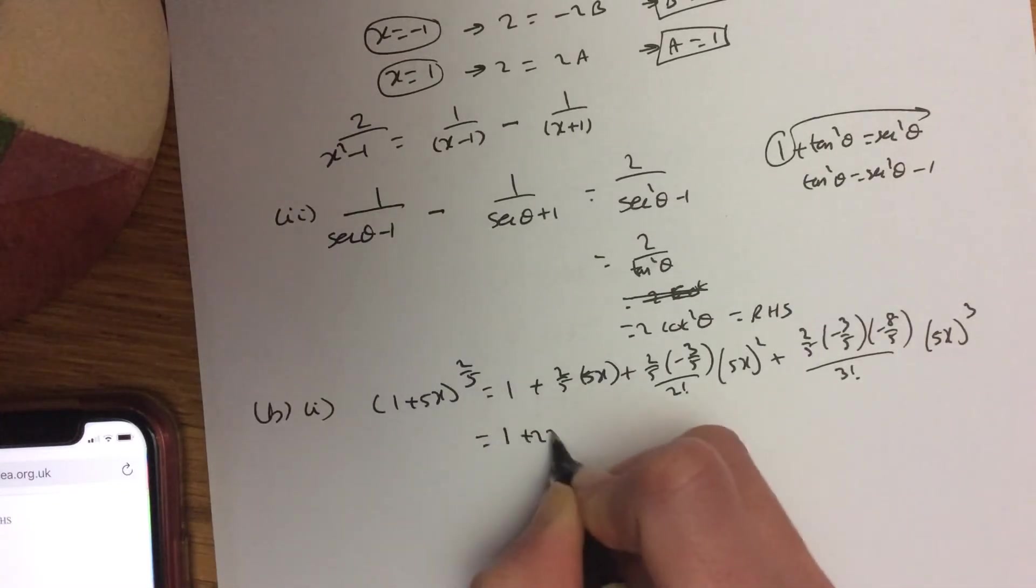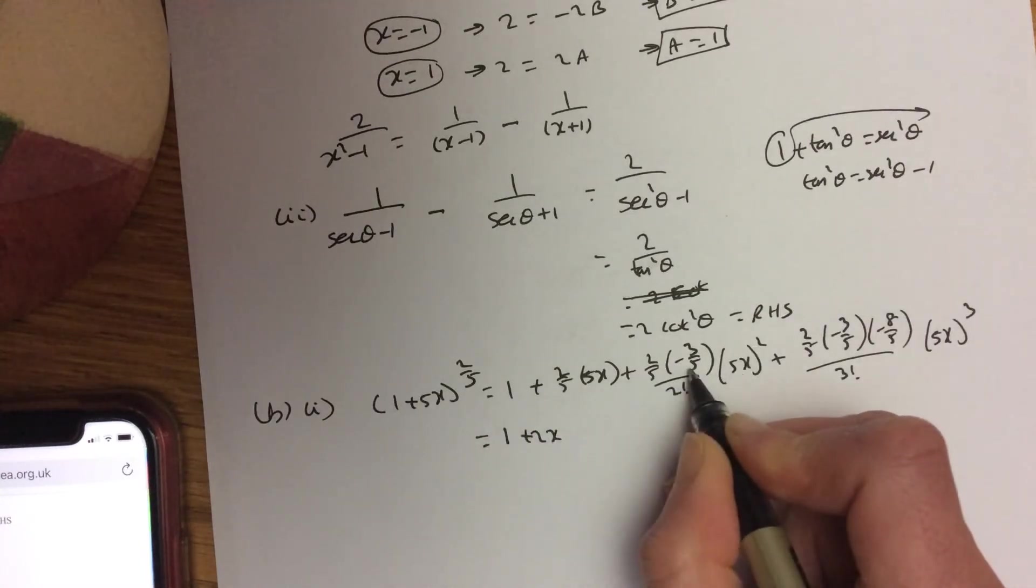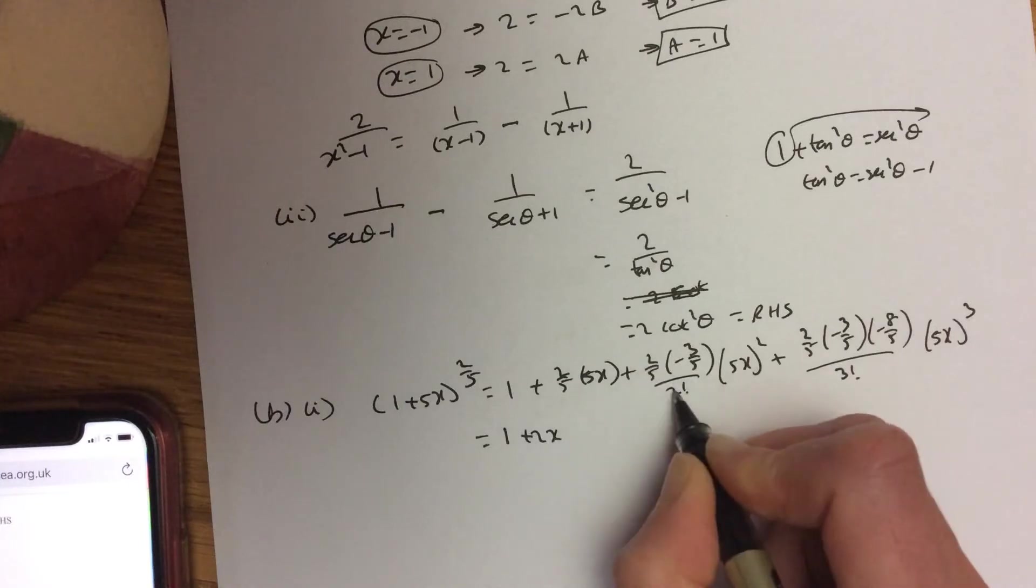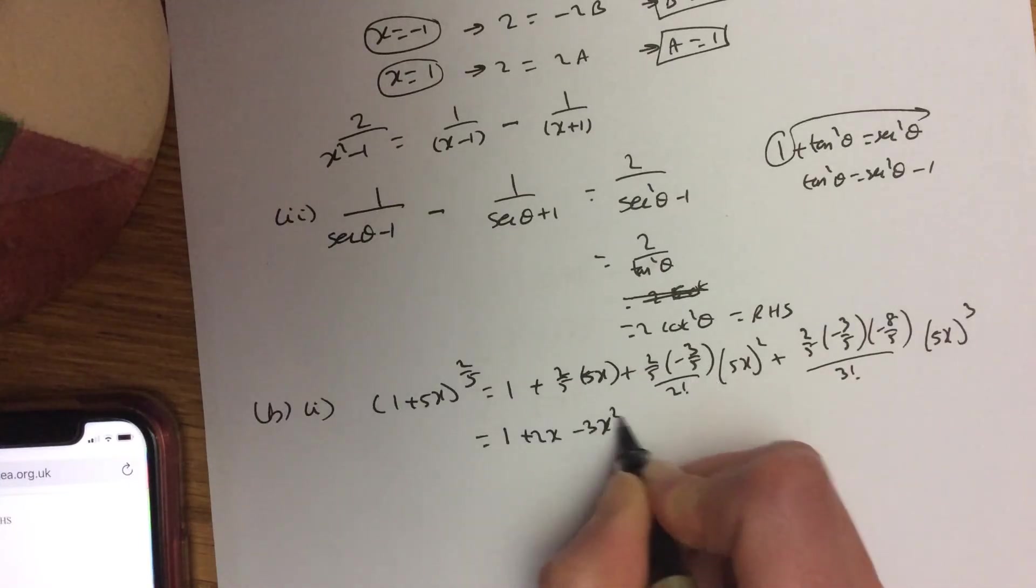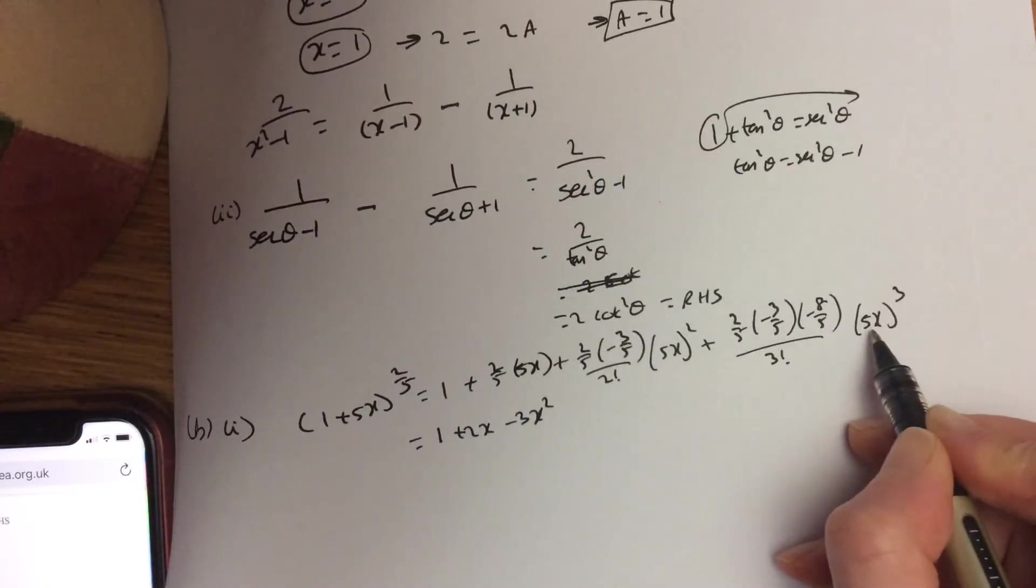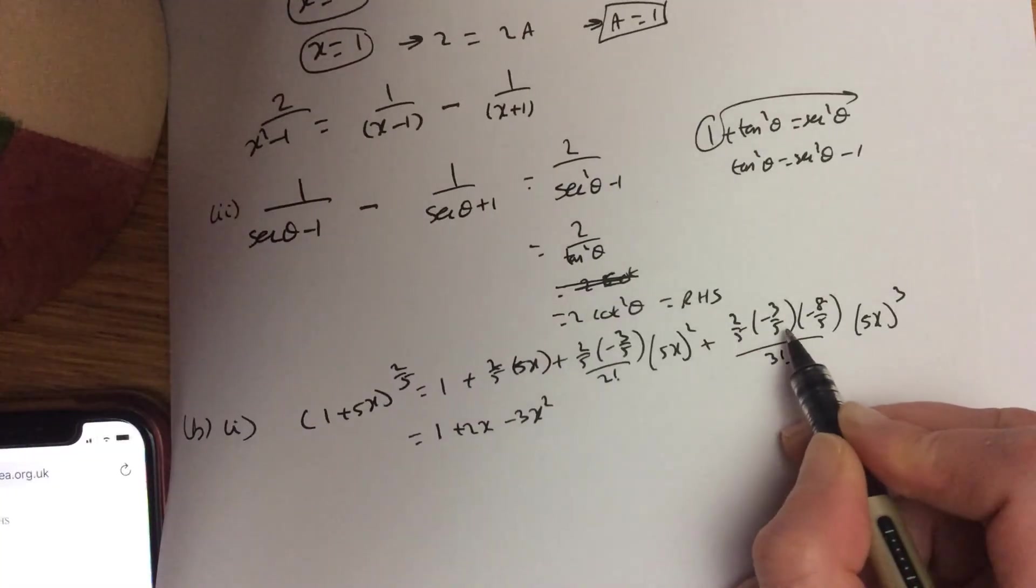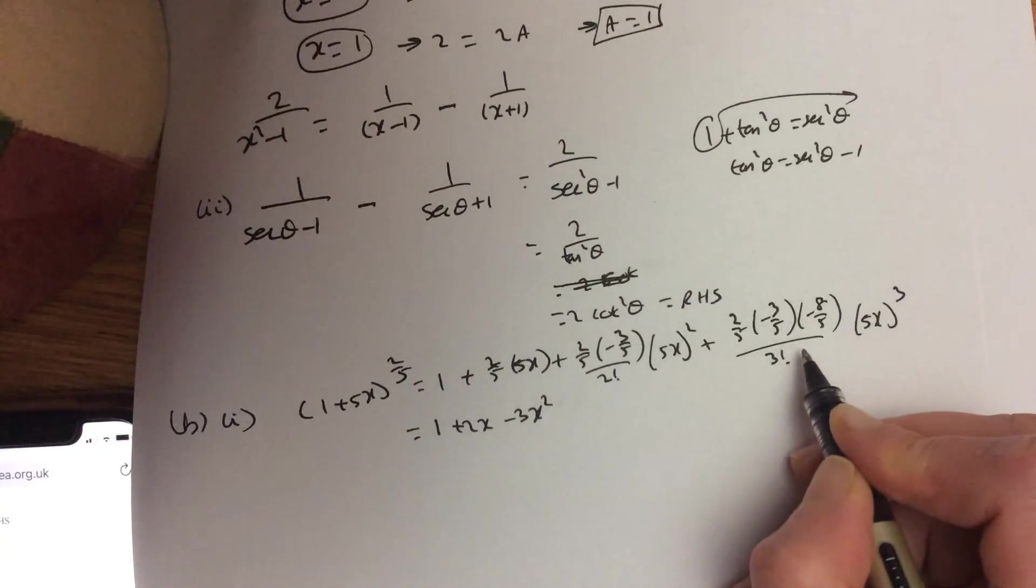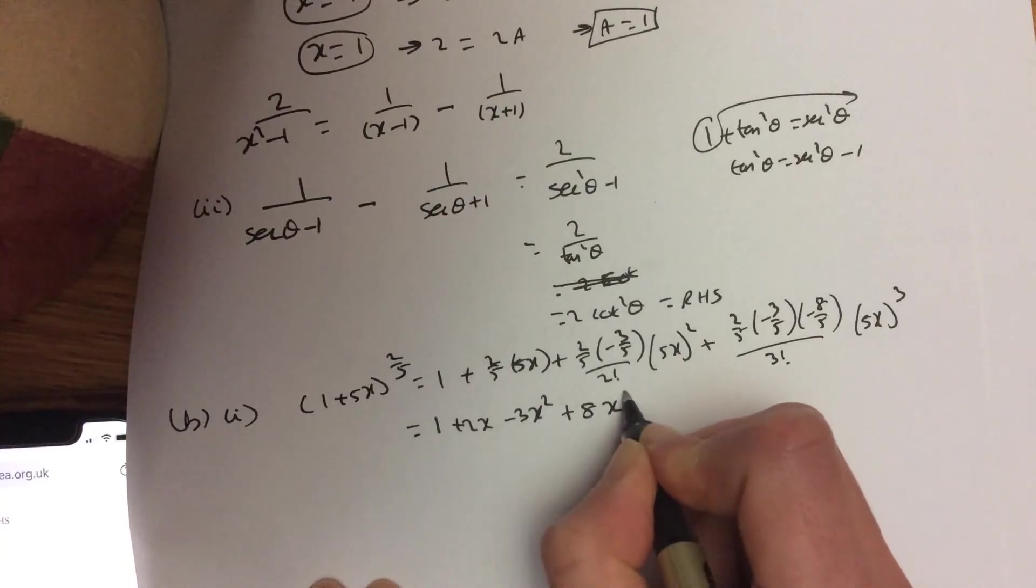So it's 1 plus 2x. I've got 2 over 5, and then 2 over 5 here is the way I cancel off. Those 2's cancel off, giving me minus 3 over 25 x squared. Same principle, 3 fives in the bottom times 3 fives. Then 3 factorial is 3 times 2, leaving me positive 8 over 125. So it's positive 8 over 125 x cubed.